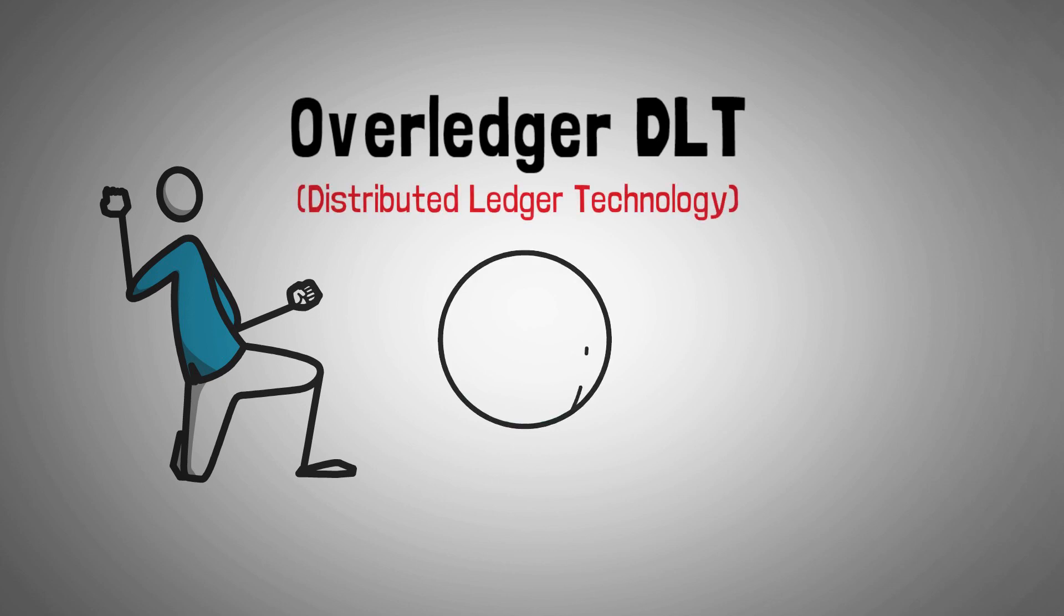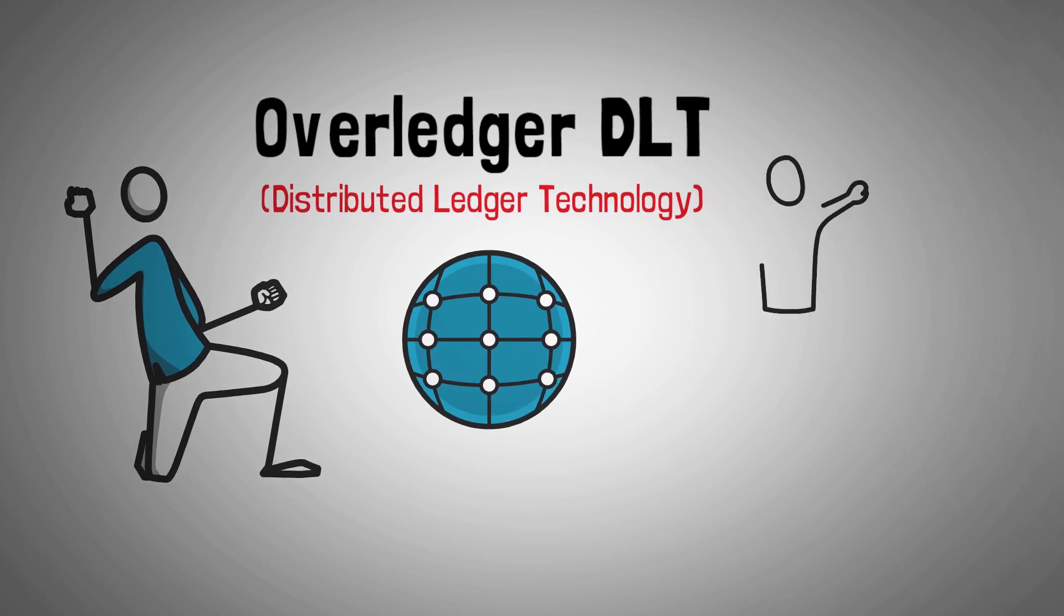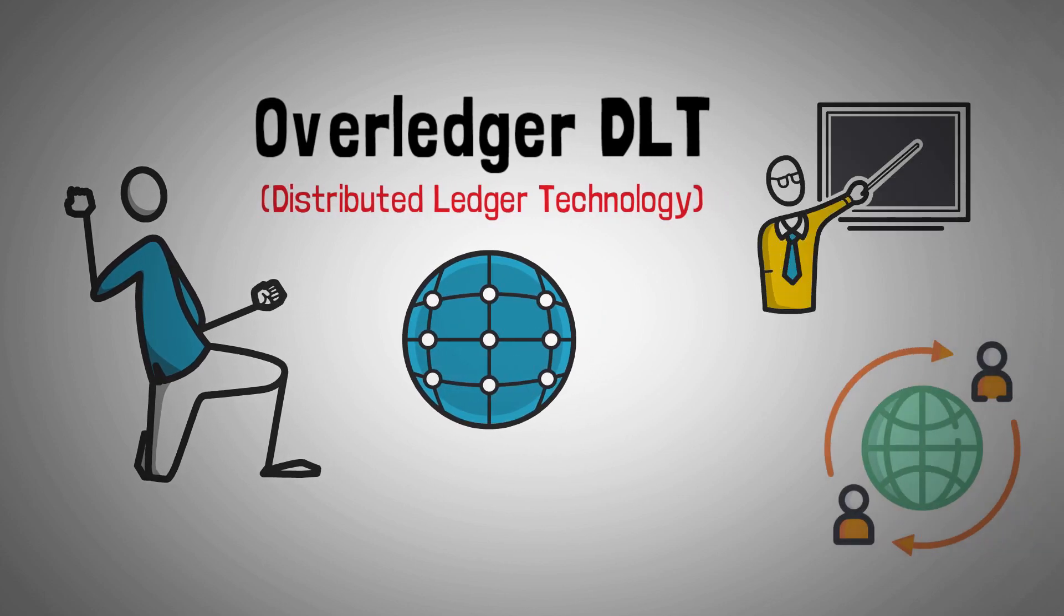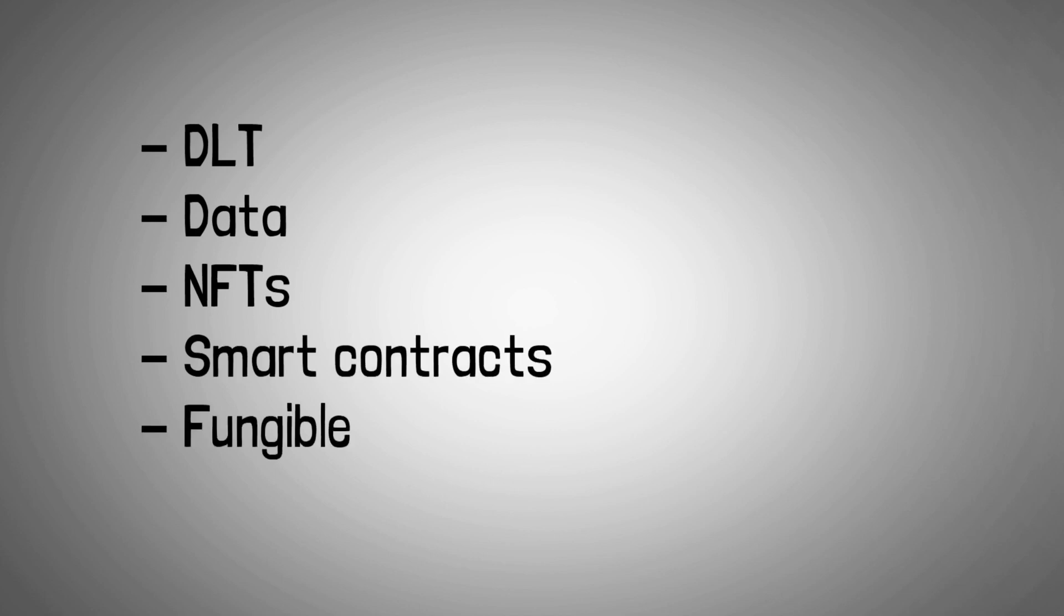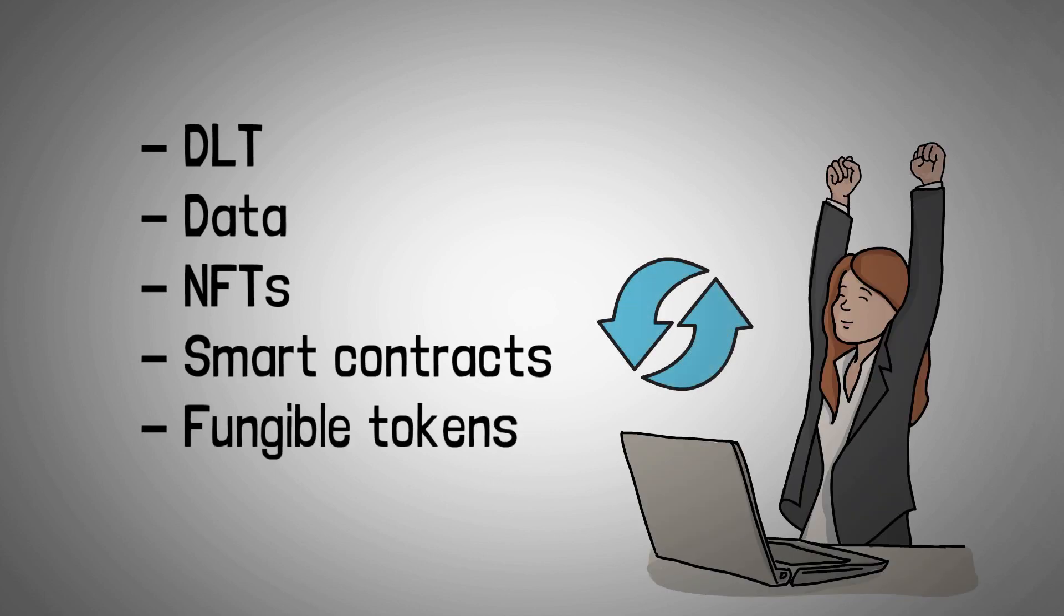This assists the system with interoperability between networks and the distributed ledger system. Using DLT, data, NFTs, smart contracts, and fungible tokens can all be transferred smoothly with Overledger. Developers can get the best out of all DLT ecosystems.